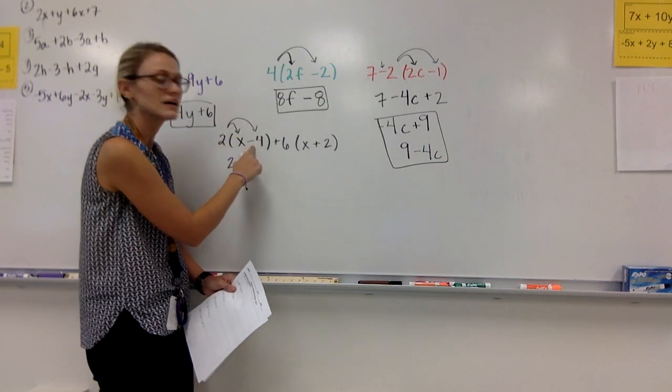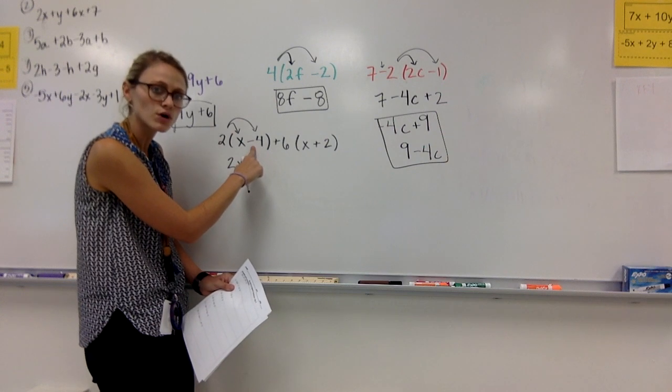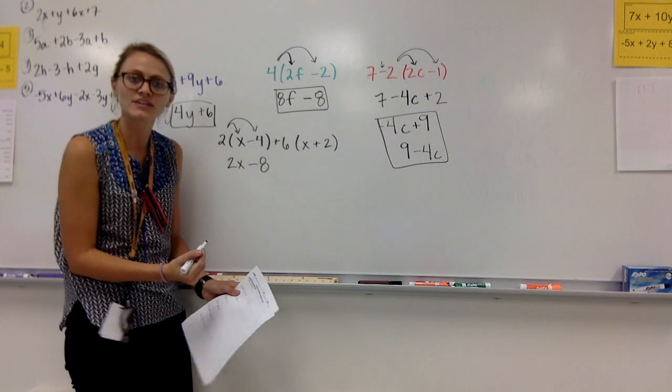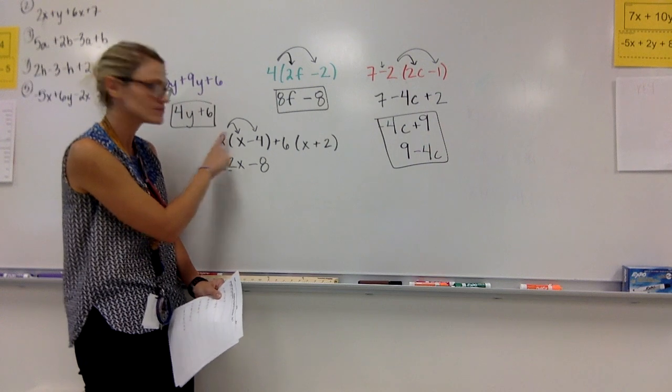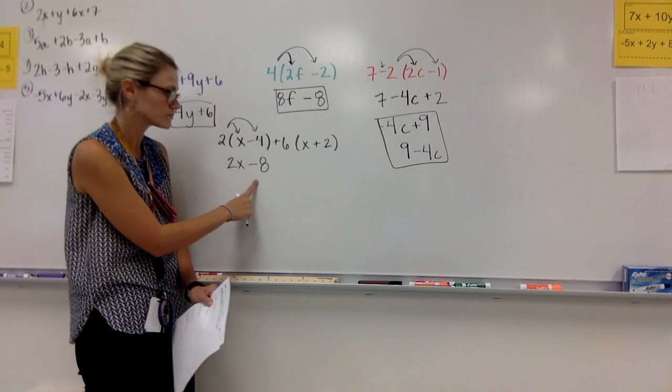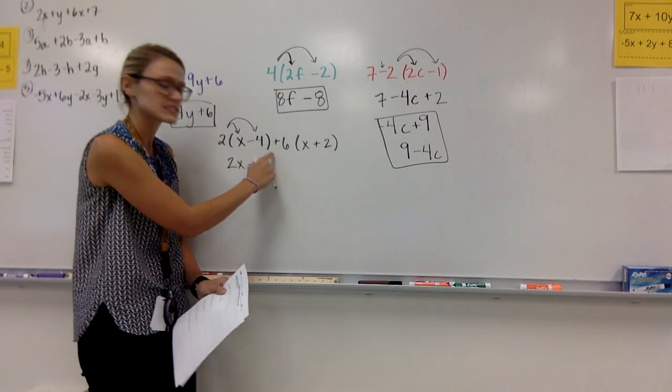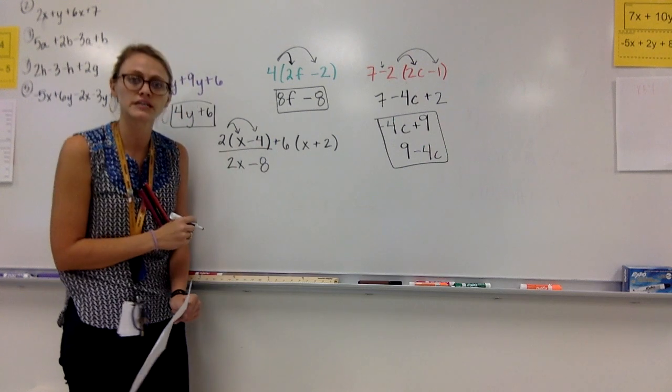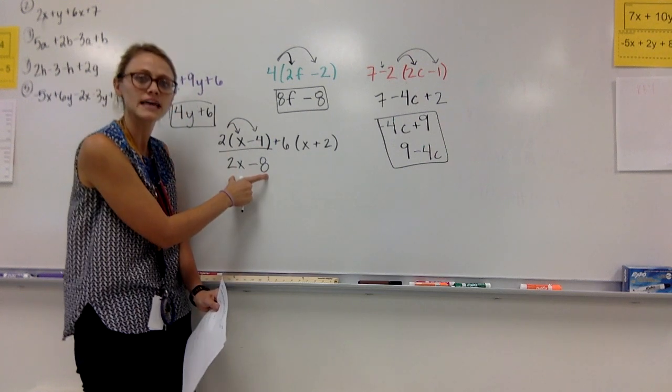I distribute it to my -4. 2 times -4 is a -8. Remember, a positive times a negative is a negative. I'm done with this. I've distributed. And I've got 2x - 8.